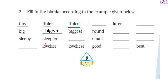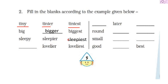Next we have 'sleepy.' They have already given us the comparative degree of 'sleepy,' which is 'sleepier.' 'Sleep' is the positive form, 'sleepier' is the comparative degree. So what will be the superlative form? It will be 'sleepiest.' For example: Radhika is the sleepiest girl in the class.